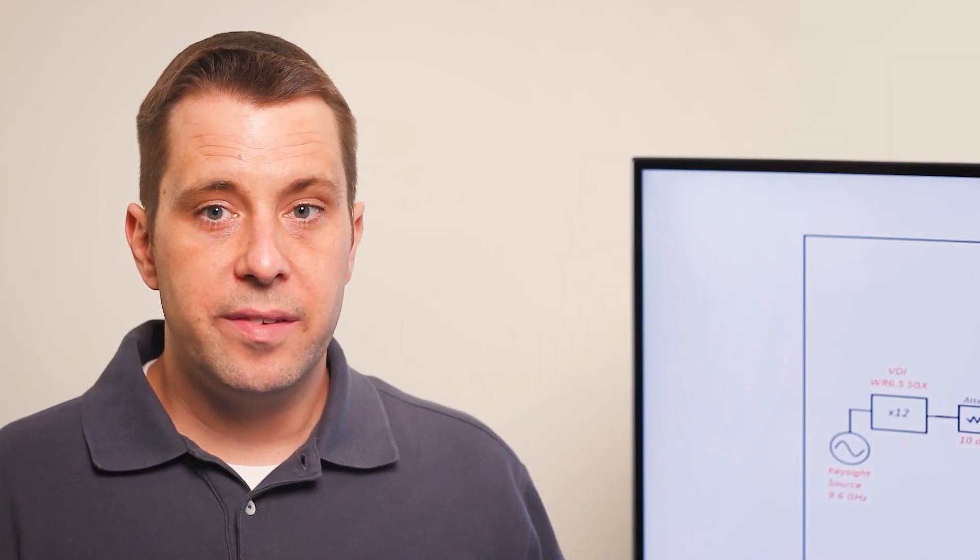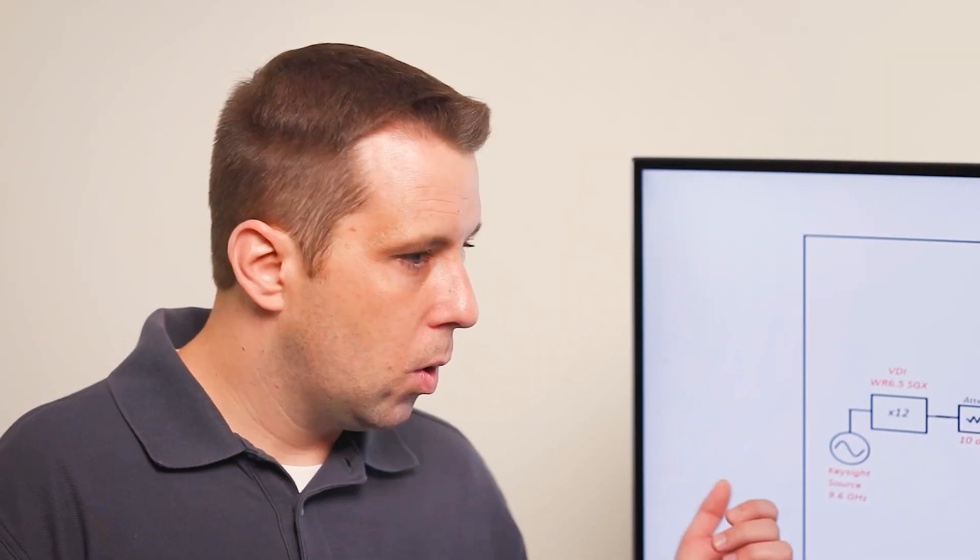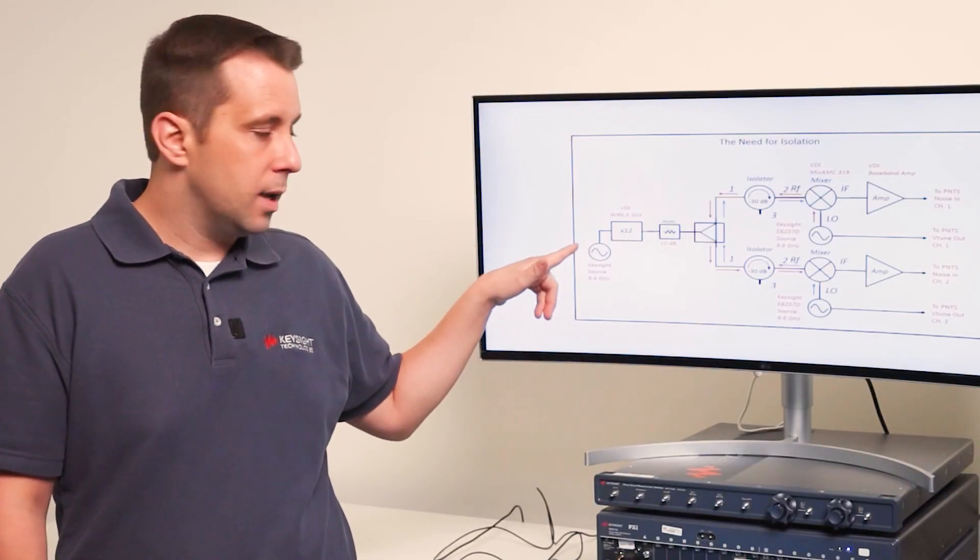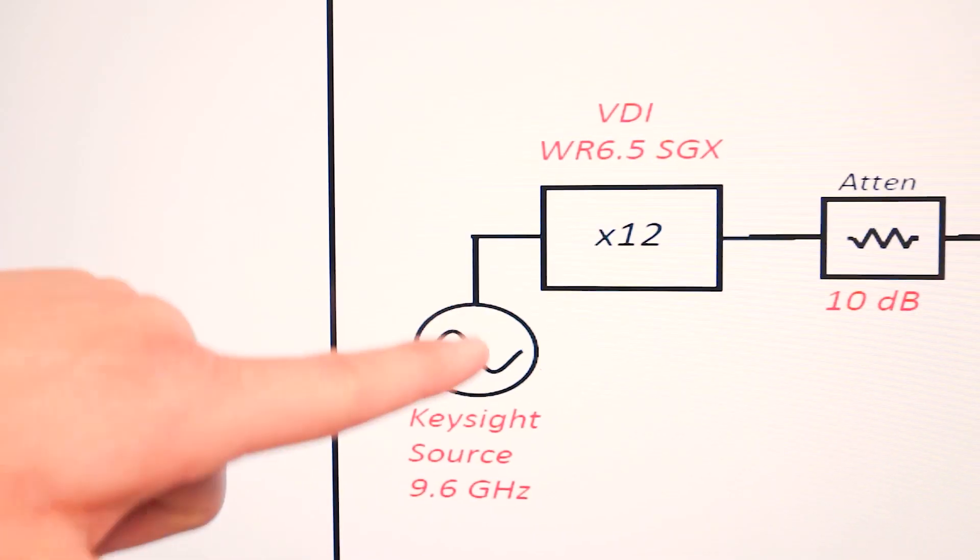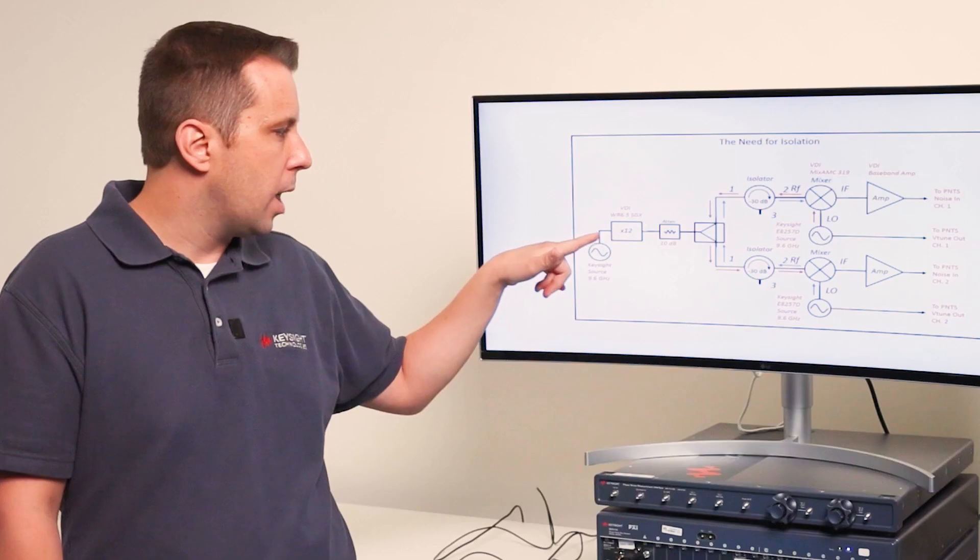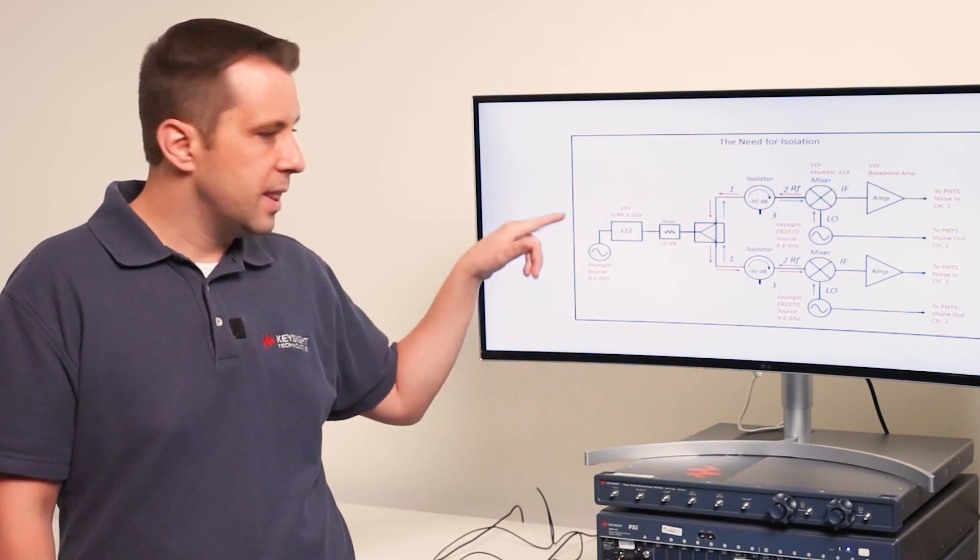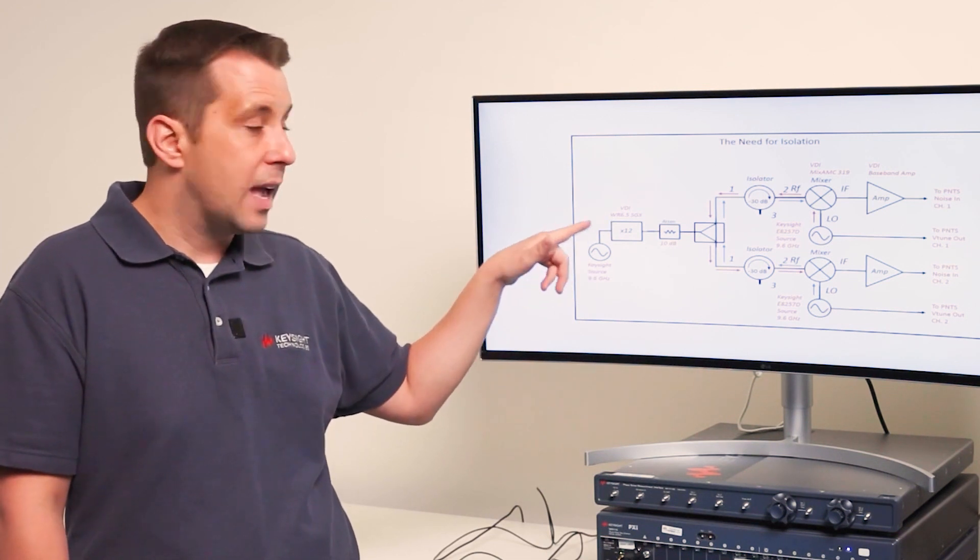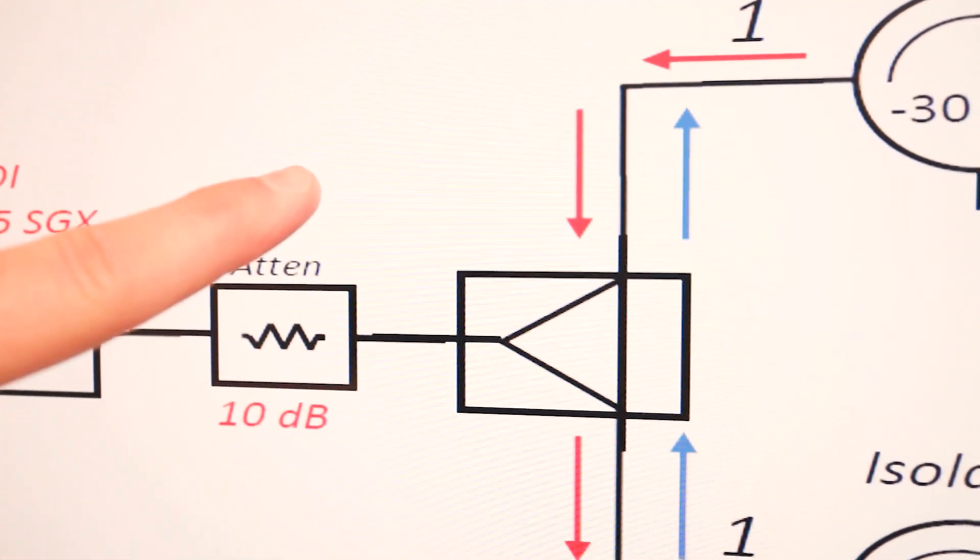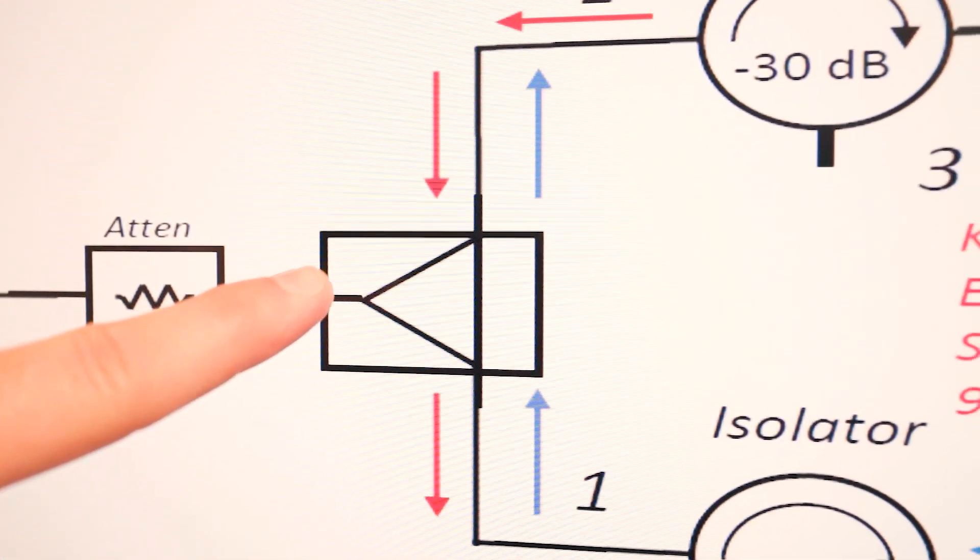Let's look at a little more detail on the block diagram. That extremely low phase noise high performance CW source is here. We go out to a times 12 active multiplier from VDI, the WR 6.5 SGX. Then we go into a 10 dB pad and then into a waveguide splitter.